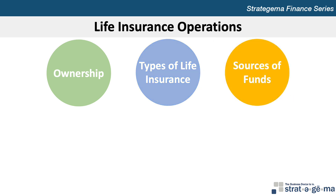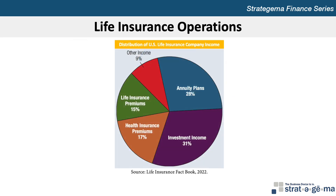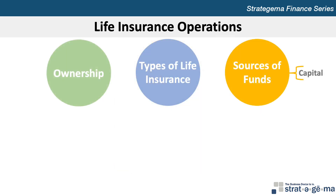Life insurance companies obtain much of their funds from premiums, as shown in this exhibit. Annuity plans, which offer a predetermined amount of retirement income to individuals, represent a significant source of funds to insurance companies. However, the largest source of funds is derived from income earned from investments that are made with the insurance premium payments received. Insurance companies build capital by issuing new stock, if they're stock-owned companies, and by retained earnings.